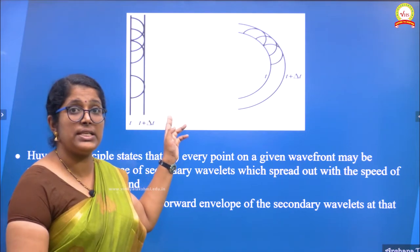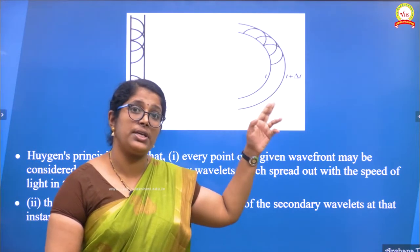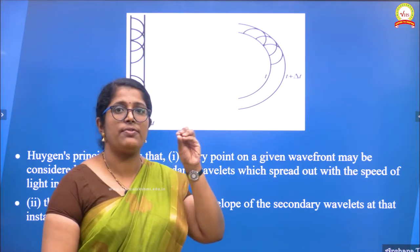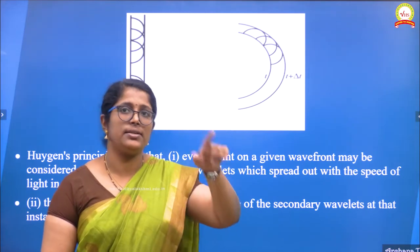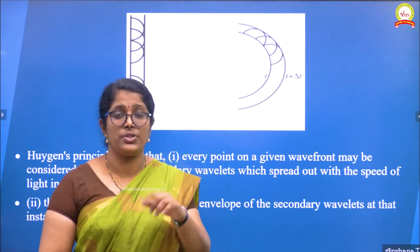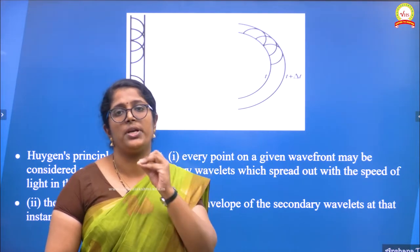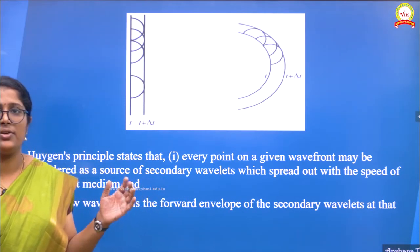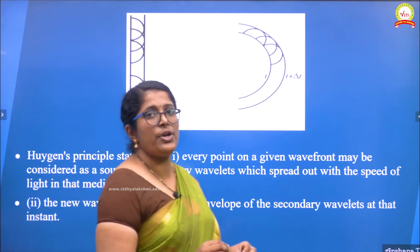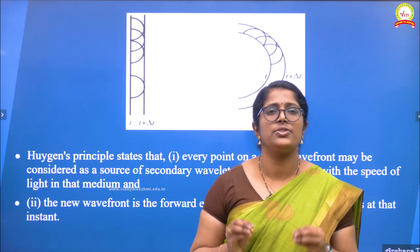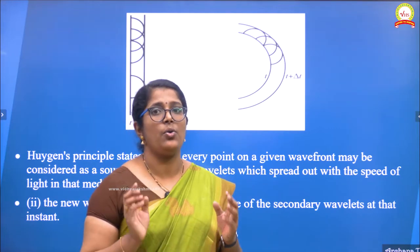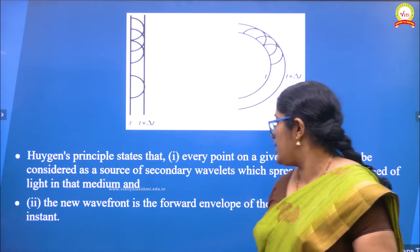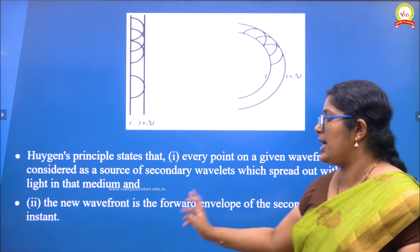In the case of a spherical wavefront, there will be a point source and you will be getting a spherical type of wavefront spreading in all directions. The two important points of Huygens principle are: every point on the given wavefront may be considered as the source of secondary wavelets which spreads out with the speed of light in that medium, and the new wavefront is the forward envelope of the secondary wavelets at that instant.